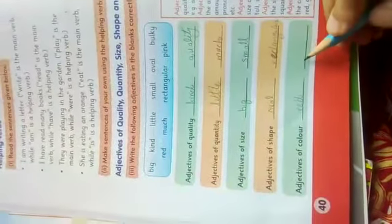Rectangular, it's an adjective of shape. And the last one is pink. It's an adjective of color. Like here, we can read this box for understanding, and it's your homework today. Thank you.